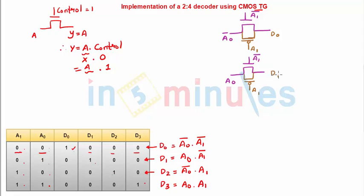Let's go ahead for d2. What do we get for d2? Again, if we see in the expression, it's nothing but a0 bar. Let's quickly do that. This is a0 bar and a1.